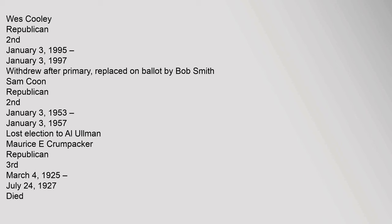Wes Cooley, Republican, 2nd, January 3, 1995 to January 3, 1997, withdrew after primary, replaced on ballot by Bob Smith. Sam Kuhn, Republican, 2nd, January 3, 1953 to January 3, 1957, lost election to Al Ullman. Maurice E. Krumpiker, Republican, 3rd, March 4, 1925 to July 24, 1927, died.